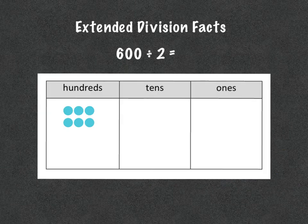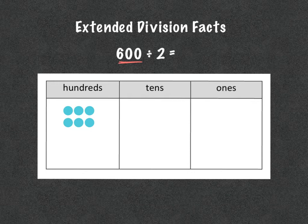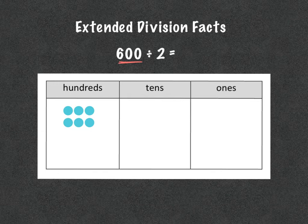I want to show you with some place value disks how this works. So if I have 600, I have 6 in the hundreds place — six hundreds — and I'm dividing them by 2, so I'm putting them into 2 equal rows, with 3 in each row. So 600 divided by 2 means I have 300, because there are 3 in each row, so that would be 300.